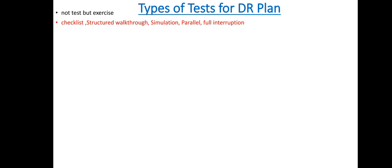Starting from the checklist and moving toward the full interruption test, we perform increasingly advanced levels of testing. In the checklist test, we read through the disaster recovery plan to check for any omissions or errors. In the full interruption test, the production services are stopped and then resumed at an alternate site.